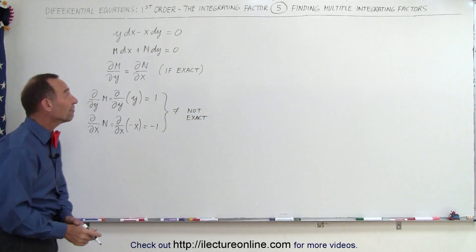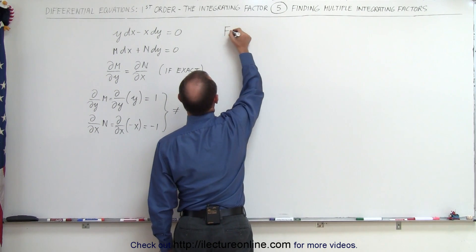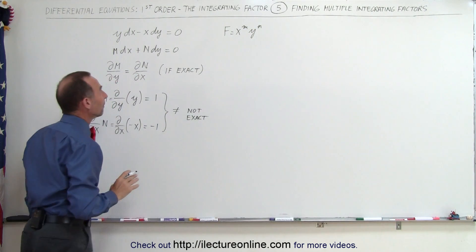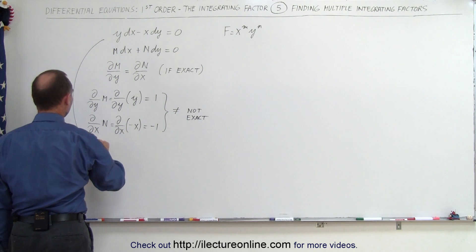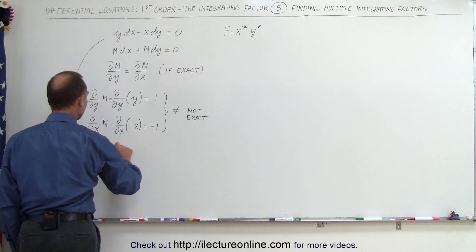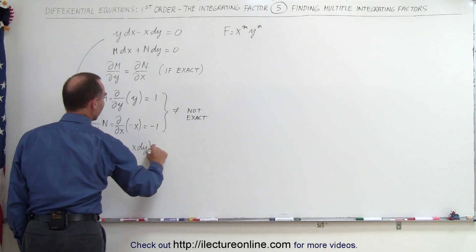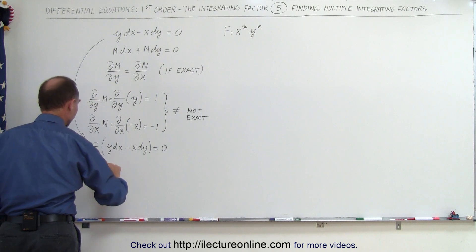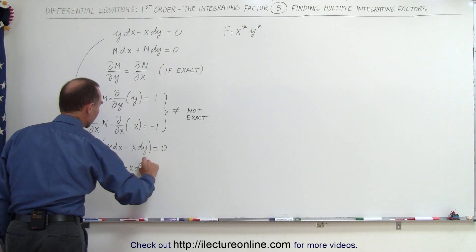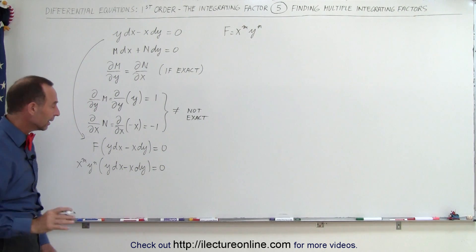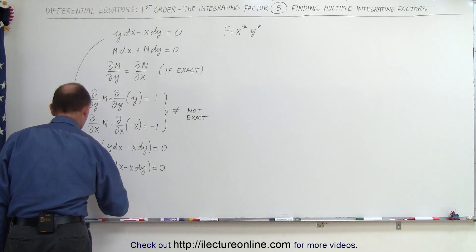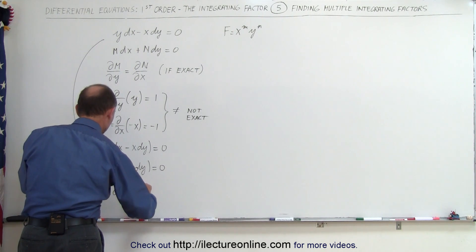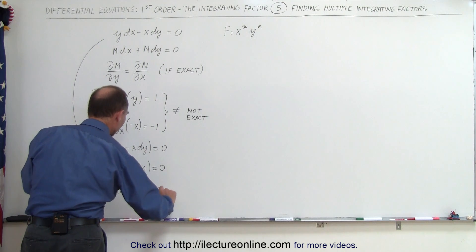That means we need an integrating factor, and the integrating factor typically can take on the form x to the m, y to the n. So we're going to multiply both sides of the equation by that integrating factor: x to the m power, y to the n power times y dx minus x dy equals 0. Multiplying through, we get x^m · y^(n+1) dx minus x^(m+1) · y^n dy equals 0.